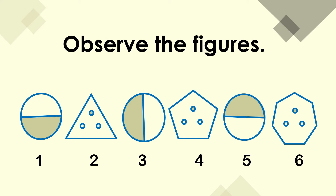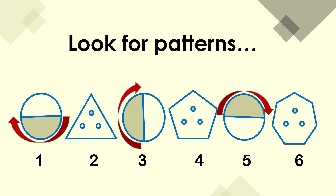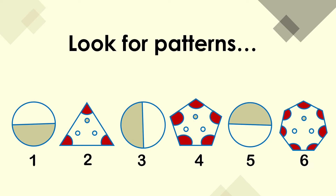For example, look at the series of figures given. Observe the patterns that occur in every other figure. We may induce that all the odd-numbered shapes are all half-shaded circles. Each circle is rotated a quarter turn clockwise from the previous circle. We have figure 1; for the third figure, the circle was rotated a quarter turn clockwise; and on the fifth figure, the circle was again rotated a quarter turn clockwise from the previous circle. We may also observe that the even-numbered shapes are polygons with consecutive odd numbers of sides and angles. For figure 2, the polygon has 3 sides and 3 angles. For figure 4, the polygon has 5 sides and 5 angles. And for figure 6, the polygon has 7 sides and 7 angles.